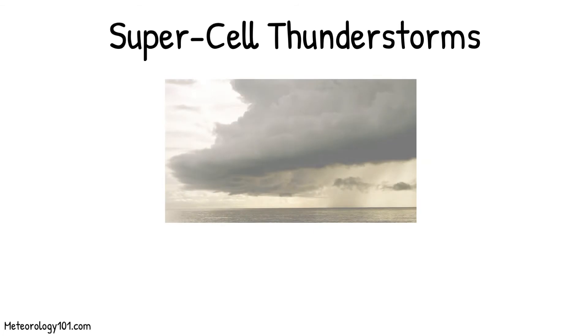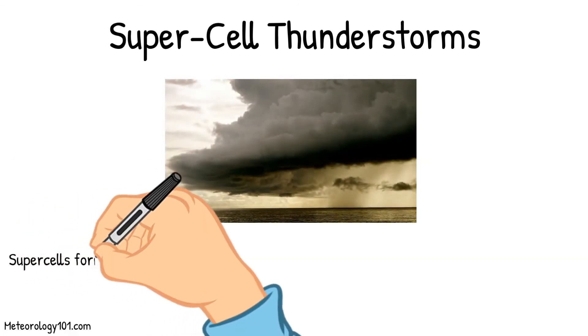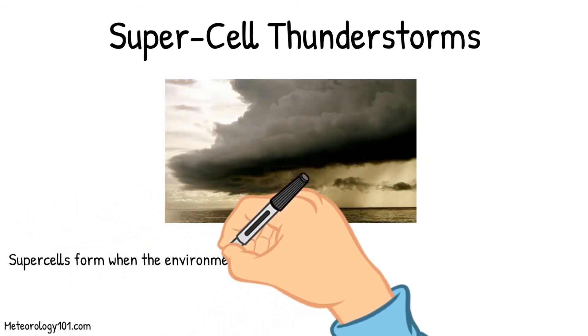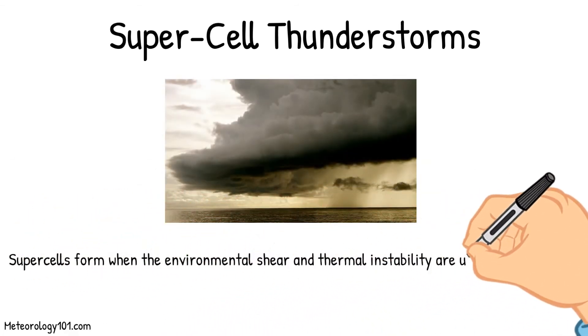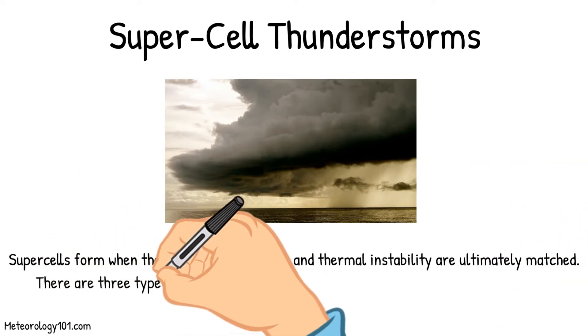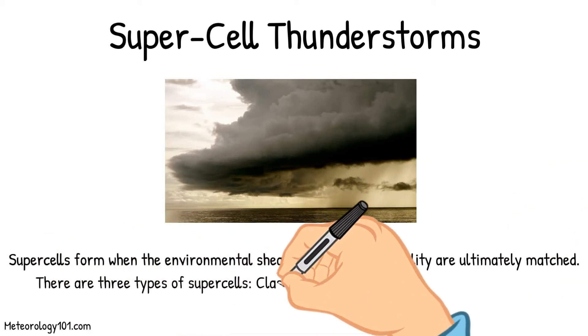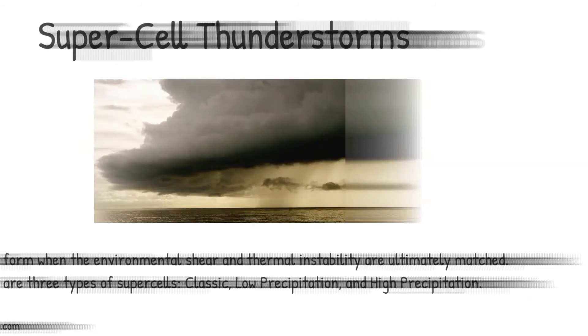Supercell thunderstorms form when the environmental shear and thermal instability are ultimately matched. There are three types of supercells: classic, low precipitation, and high precipitation.